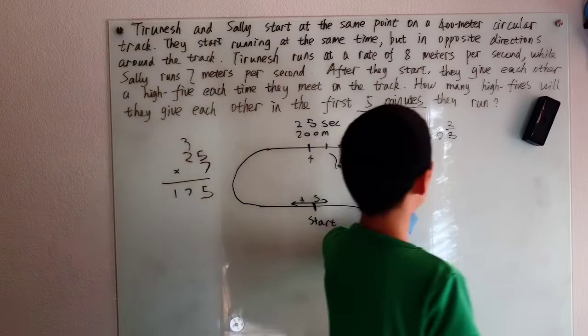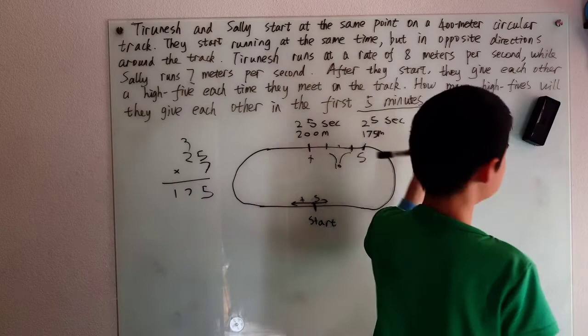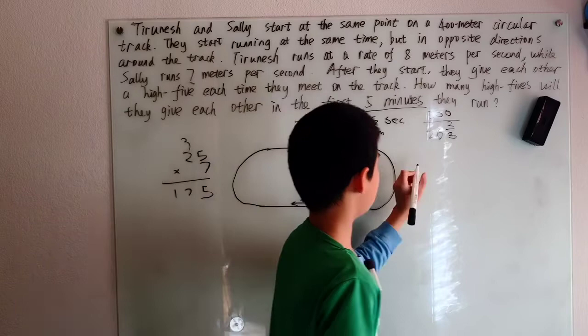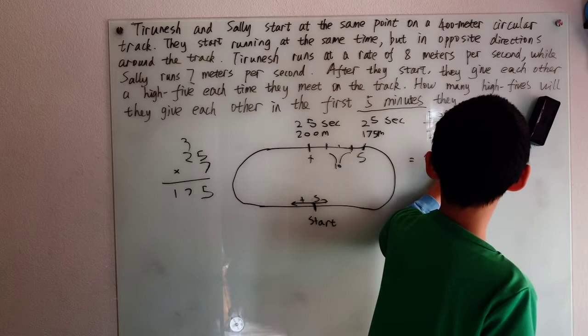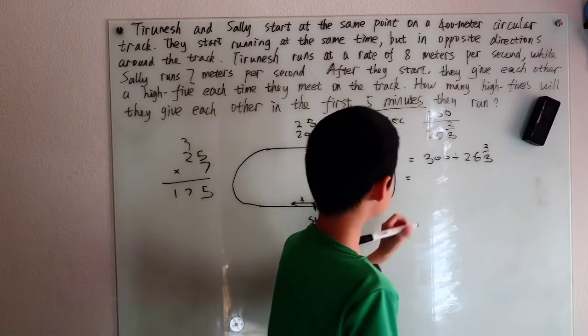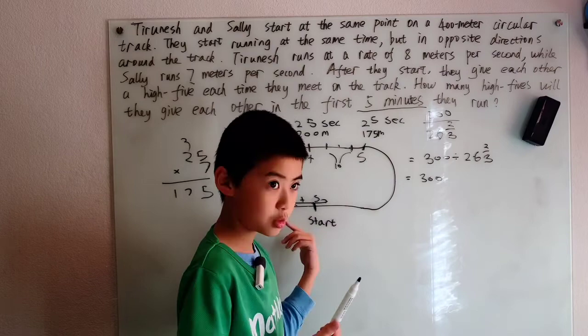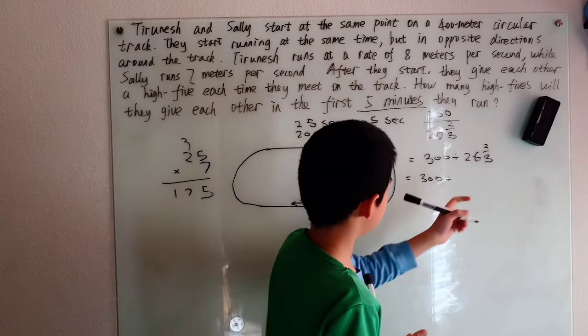So five minutes, well that's five times 60 which is 300 seconds. And then we can just do this arithmetic. 300 divided by 26 and 2 thirds. And we can change 26 and 2 thirds to a fraction. 3 times 26 is 3 times 20 plus 3 times 6. That's 78 and then we add up on to the 2 and we get 80 over 3.